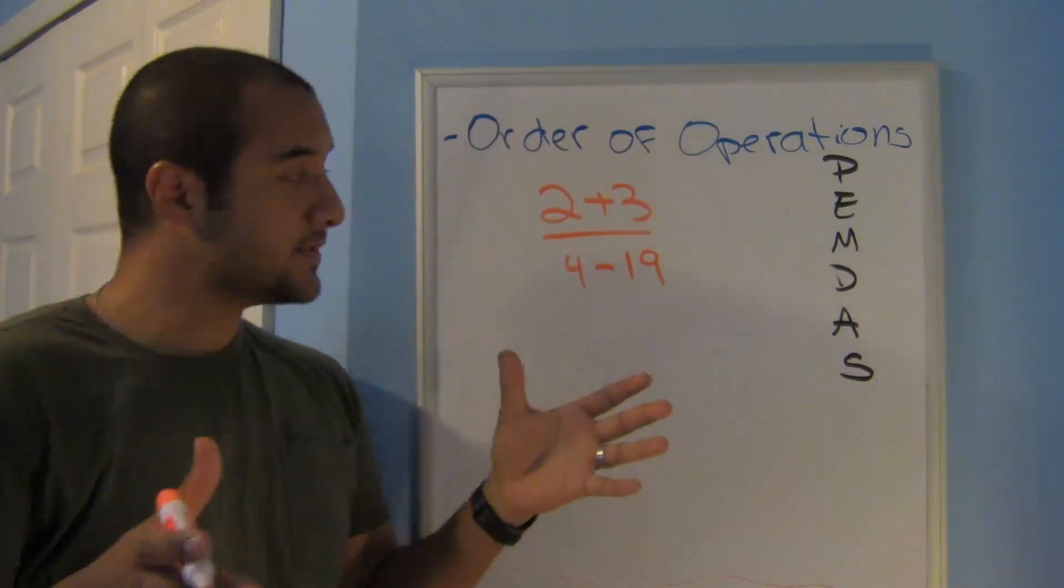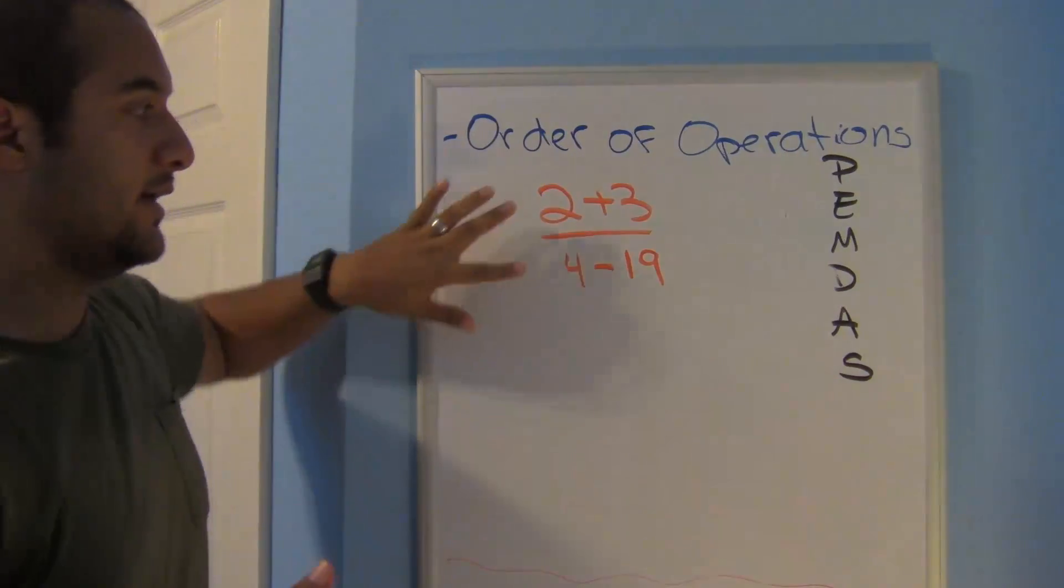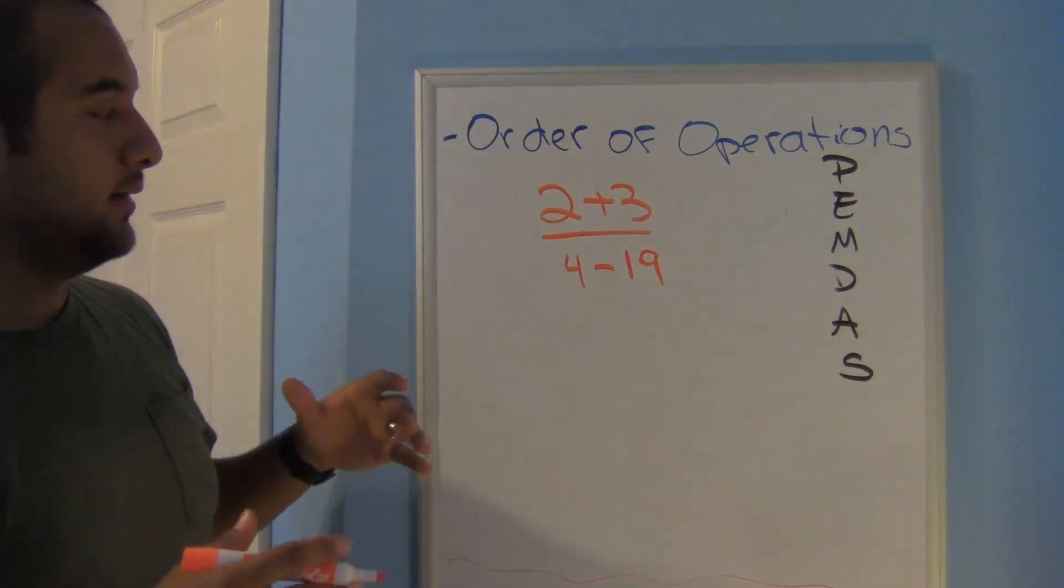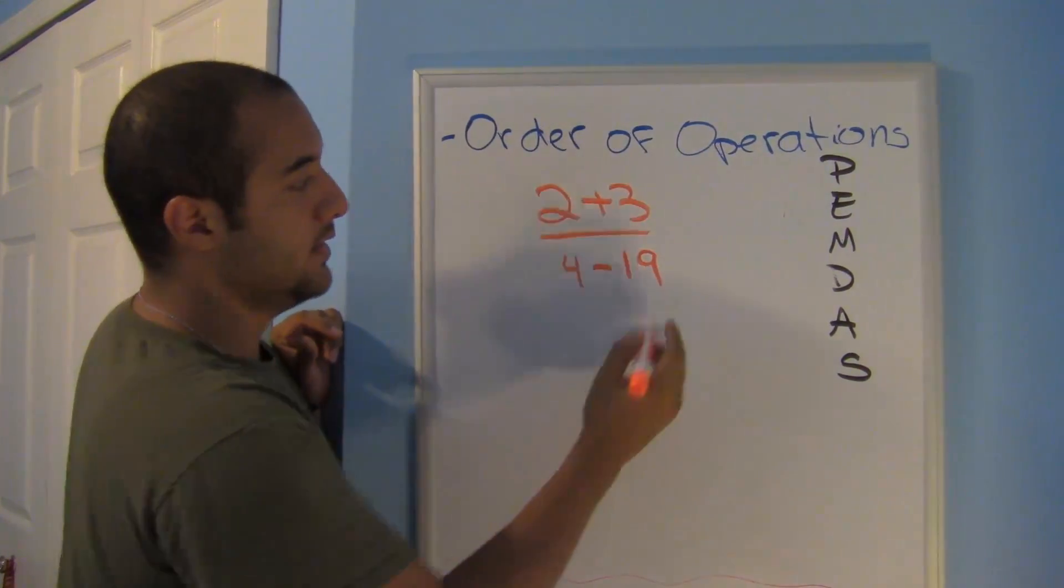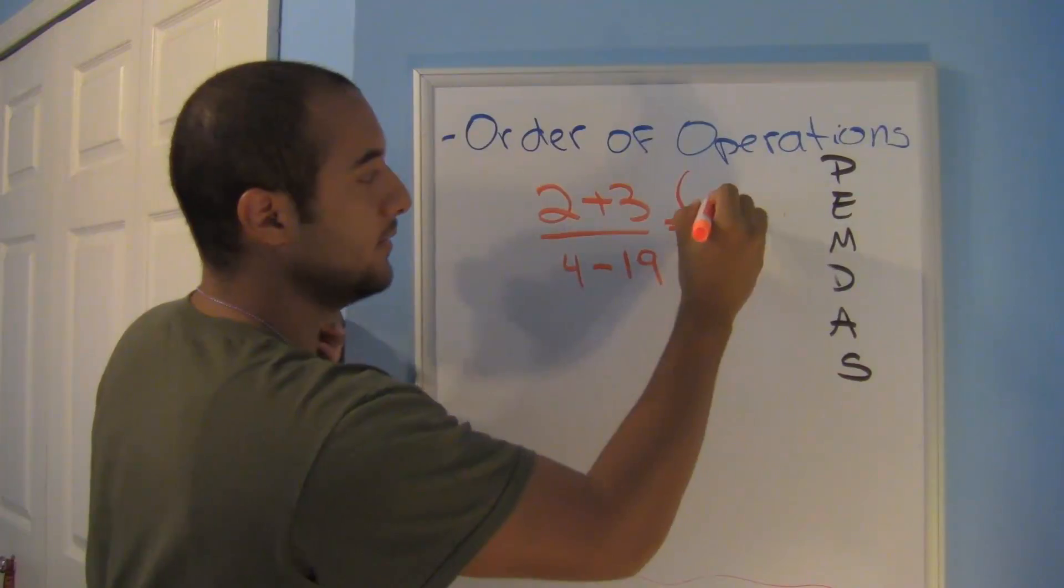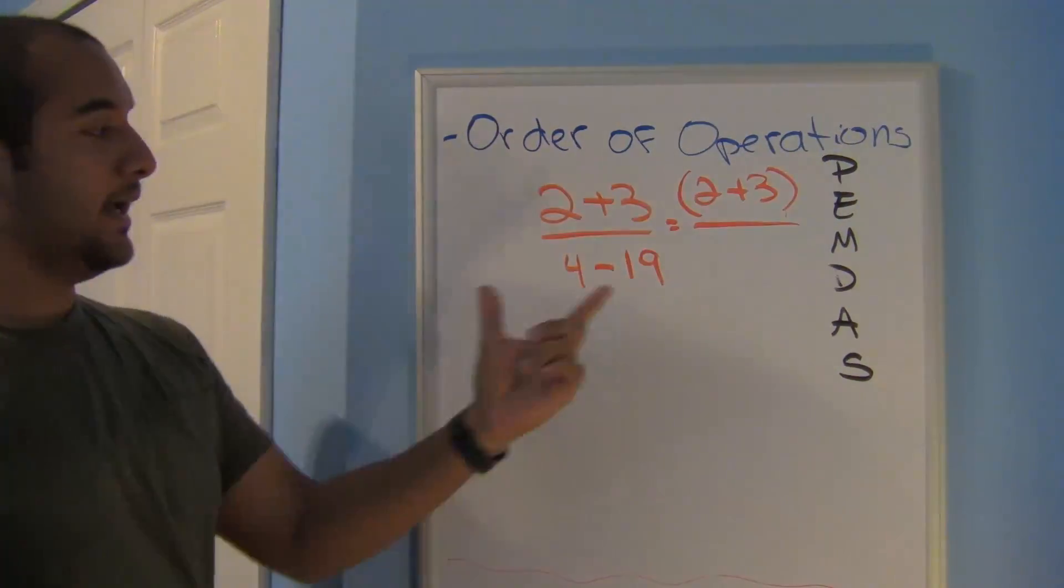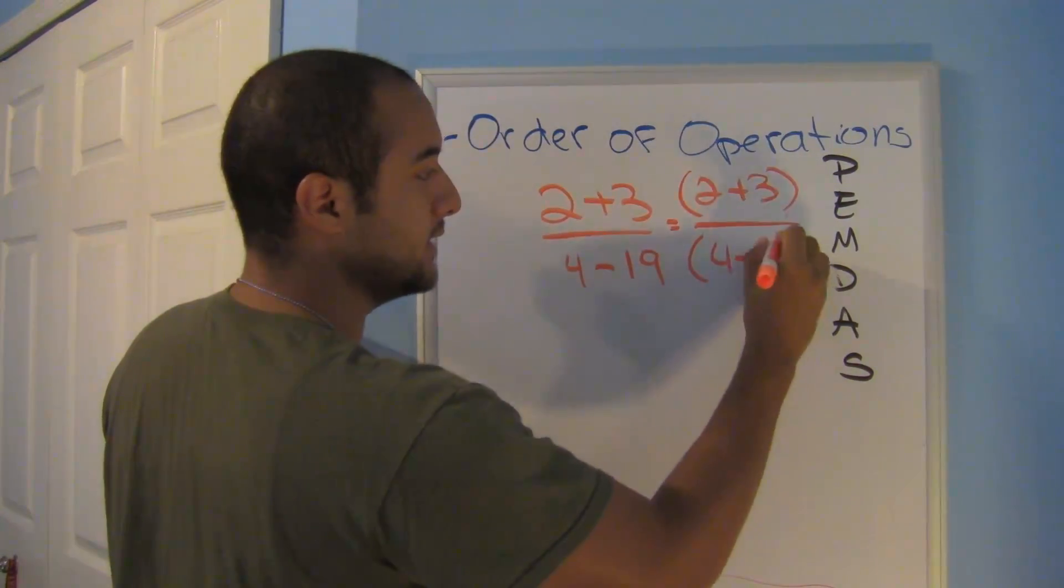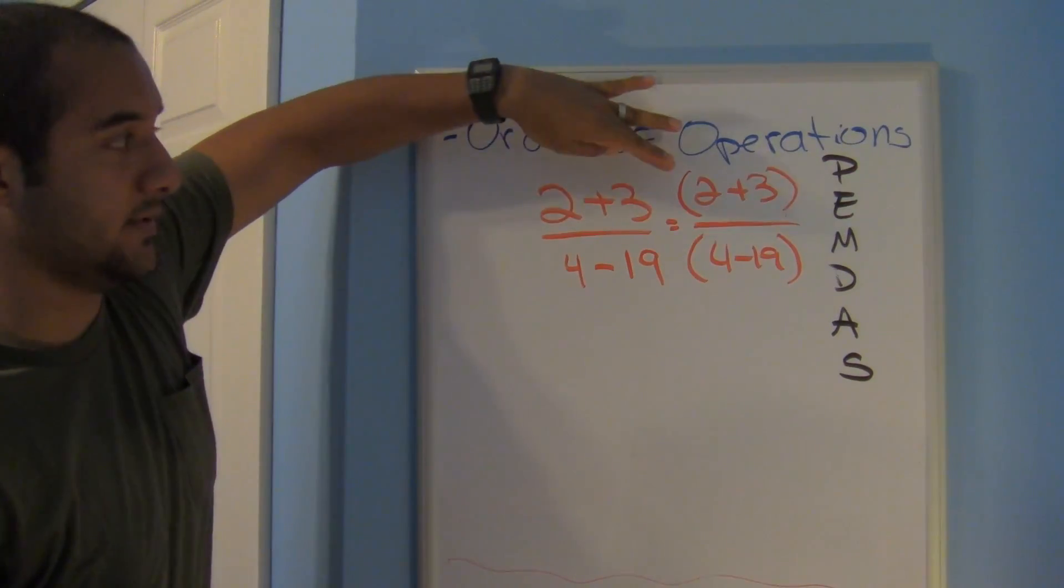All right. What if you have something like this? 2 plus 3 over 4 minus 19. Here you're not going to go ahead and start dividing anything. Here we're saying that the numerator is 2 plus 3. So that's like having parentheses for a numerator and also for your denominator. 4 minus 19. They're not going to give you this. They're going to give you this problem instead. But this is what it means.